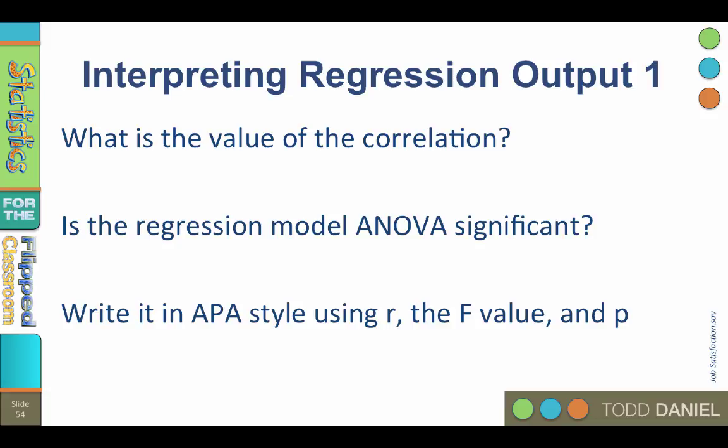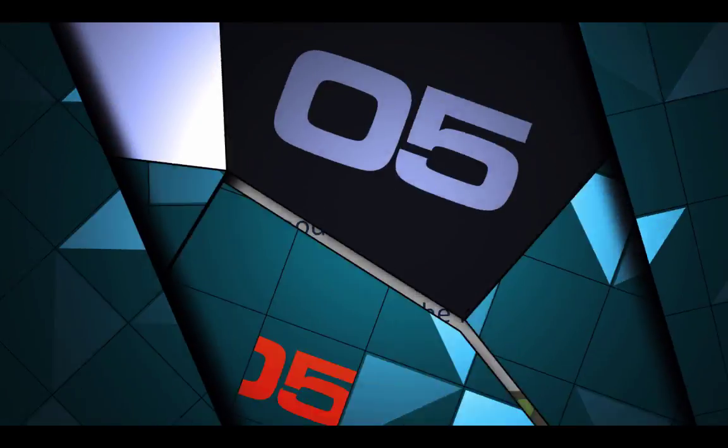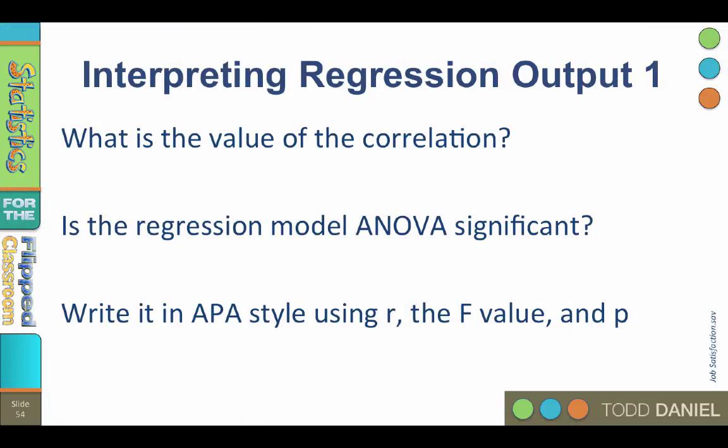Let's start with the correlation. What is the value of the correlation? Stop the video if you want to and find this value in the output. The correlation is r equals positive 0.65. Remember, you would not write the correlation as 0.65 because the r value cannot be greater than 1.